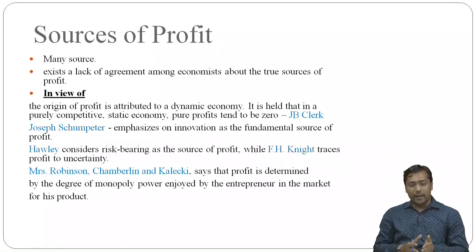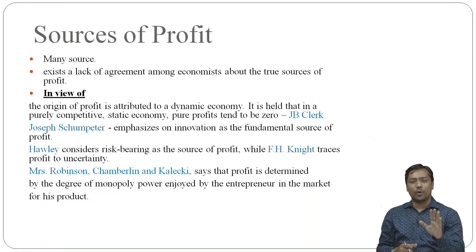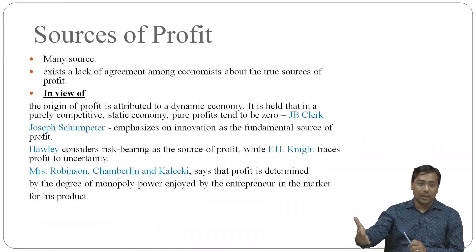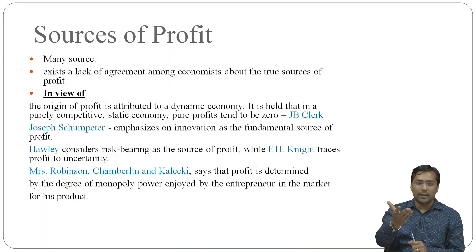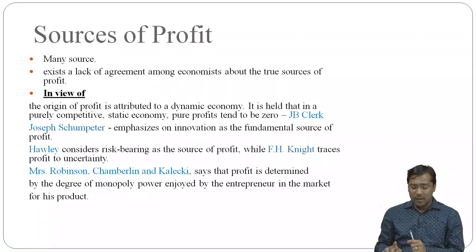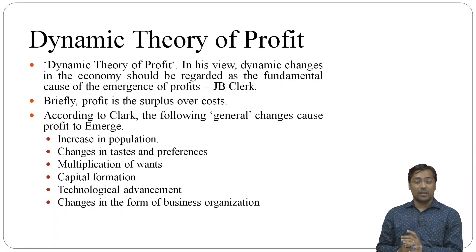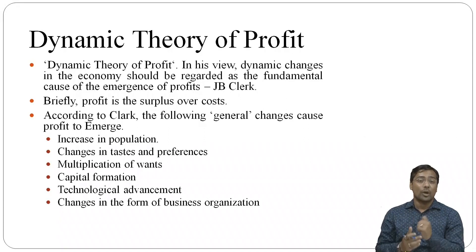So the exact source of profit determination is debated — different economists have different points of view. Clark says there should be a dynamic economy; Schumpeter says something innovative must happen. Now, what does the dynamic theory of profit mean? J.B. Clark says dynamic changes in economics should be regarded as fundamental causes of the emergence of profit. Profit is a surplus over the cost.